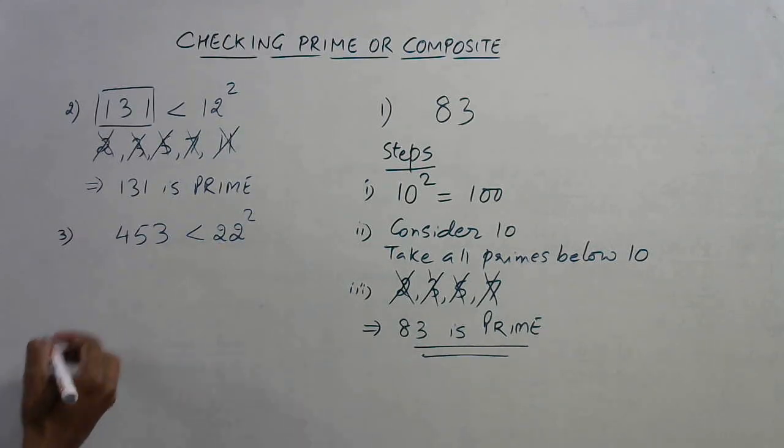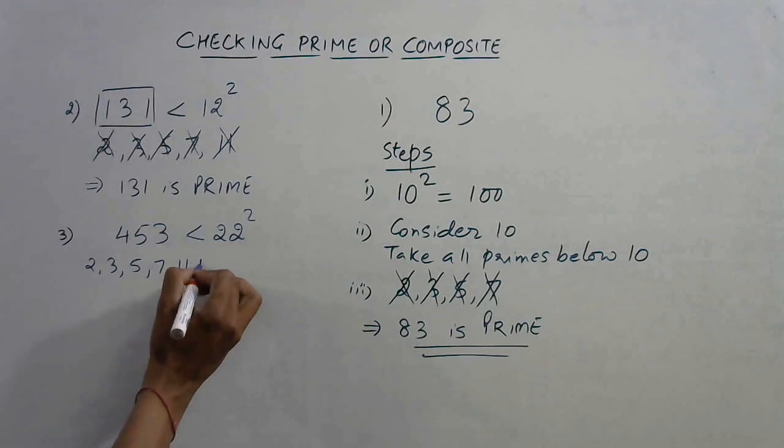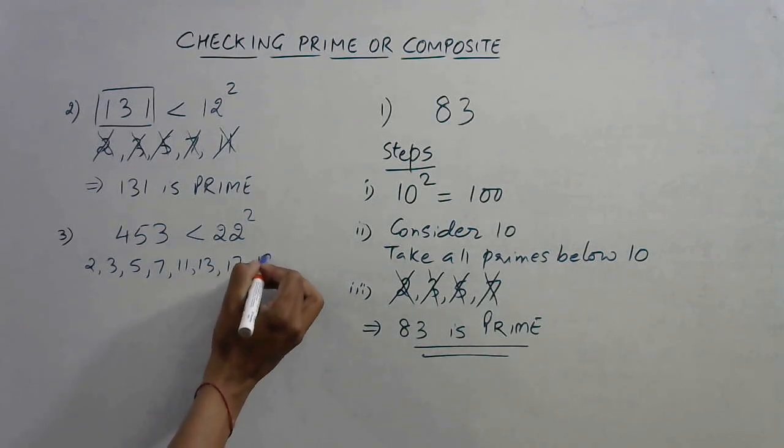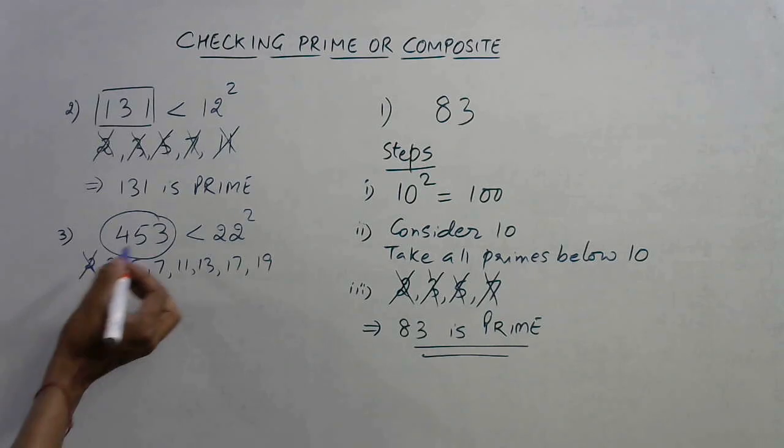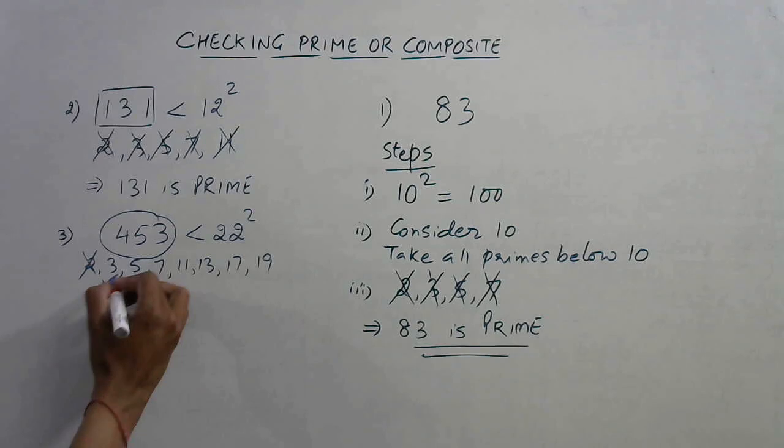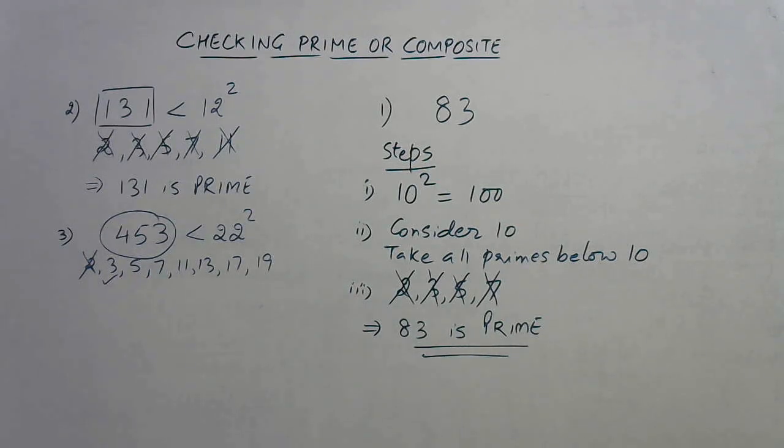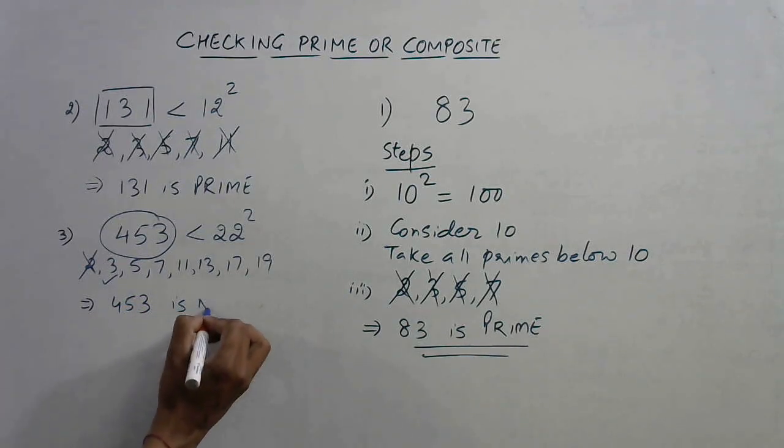So I need to take numbers below 22, prime numbers below 22, which are 2, 3, 5, 7, 11, 13, 17, 19 - that's it. The number is not divisible by 2; obviously it's an odd number. 4 plus 5, 9, 3, 12. So 12 is divisible by 3, so we have a number which exactly divides 453. That means 453 is not prime.